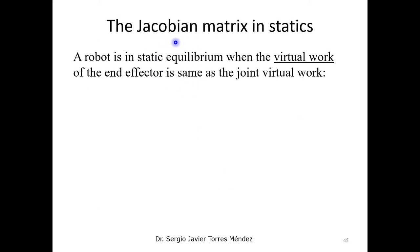Now, in this course we are going to use the Jacobian matrix approach that is used in the virtual work method. When we are talking about statics, we also relate with equilibrium balance, in this case between the virtual work that we have for the end effector of the robot and the joints.